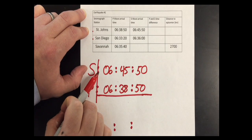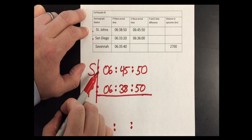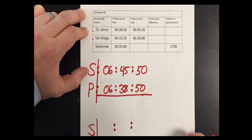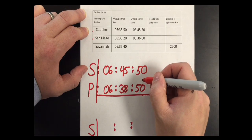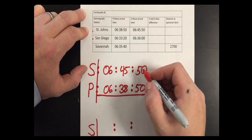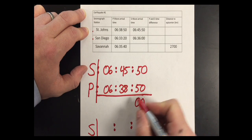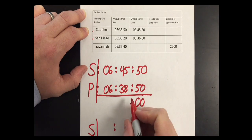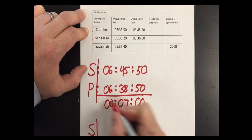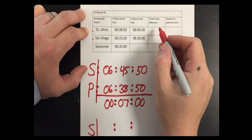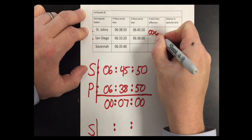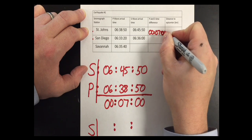You'll notice the S wave arrival time goes on top because it's always going to be a bigger number and we want bigger numbers on top. Remember that the S wave travels slower, that's why it arrives later. Now we subtract going from seconds to minutes to hours: 50 minus 50 gives 0, 45 minus 38 gives 7, and 06 minus 06 gives 0. So for St. John's, the P-S wave time difference is 0 hours, 7 minutes, and 0 seconds.